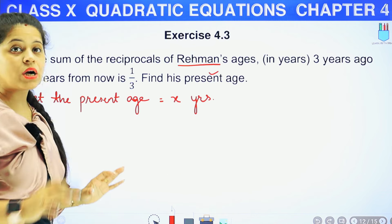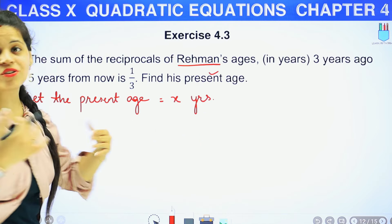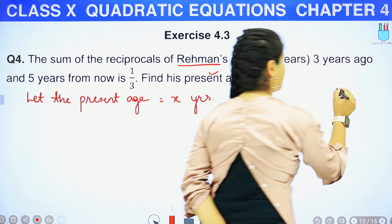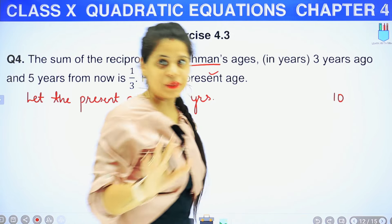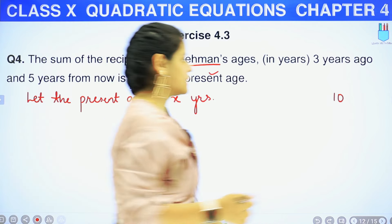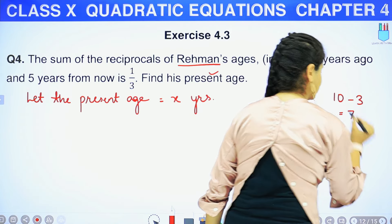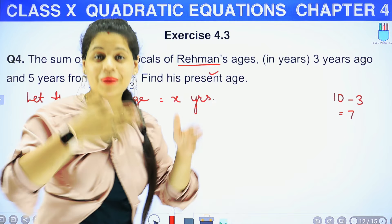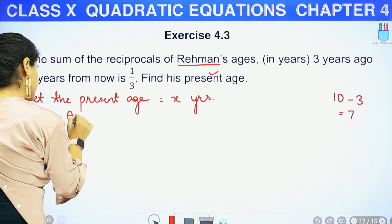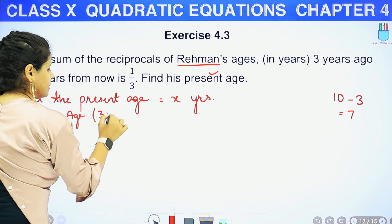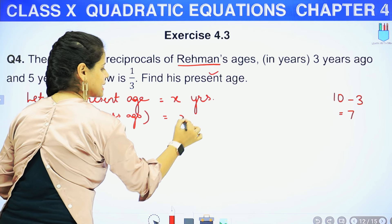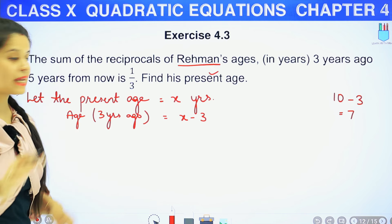अब 3 years ago and 5 years from now की बात है. 3 years ago उसकी age क्या होगी? For example, अगर अभी आप 10 years के हो, तो 3 साल पहले आपकी age क्या थी? 10 minus 3 = 7 years. तो present age में से 3 minus कर दिया. So age 3 years ago = X minus 3.